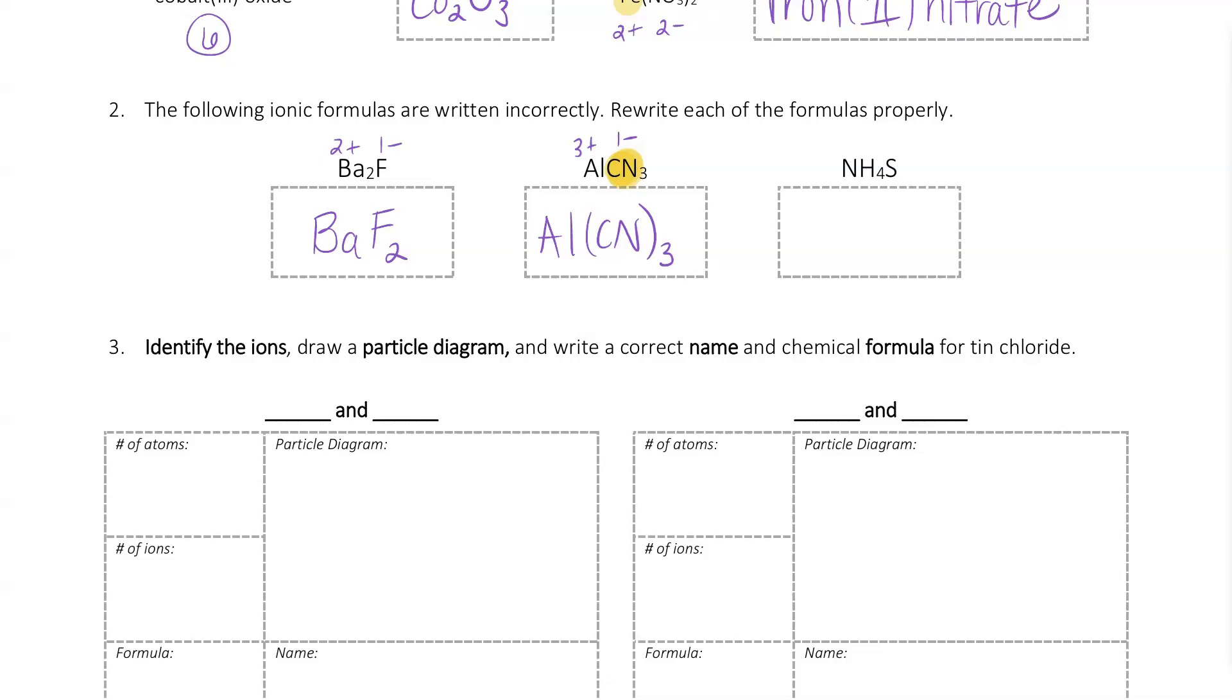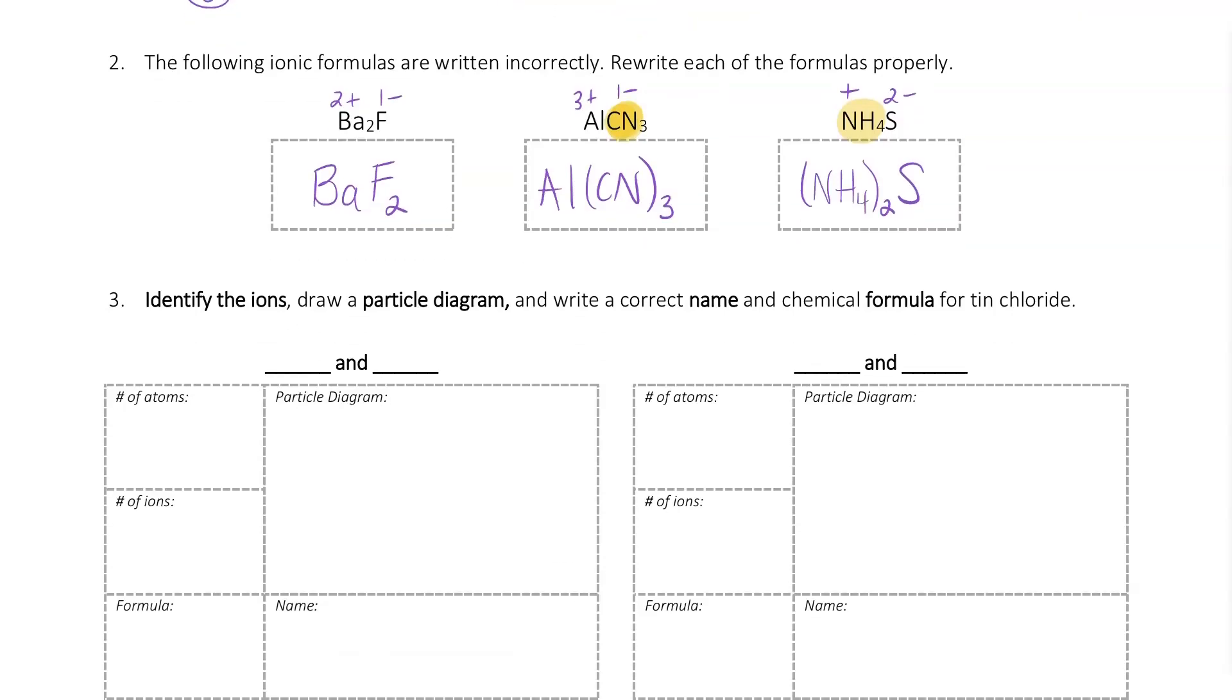And then we've got, to round this out, another polyatomic ion, that NH4 plus. That's the ammonium plus 1. And then the sulfur is minus 2, which means we need two ammonium ions. That's going to be NH4 in parentheses with a 2. And then the S to make that one balanced out.